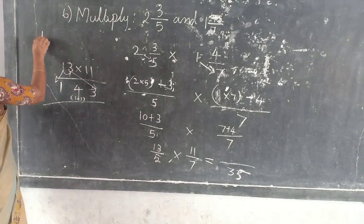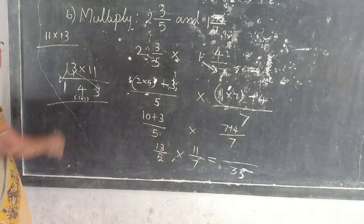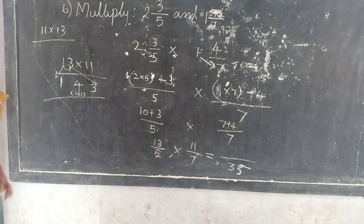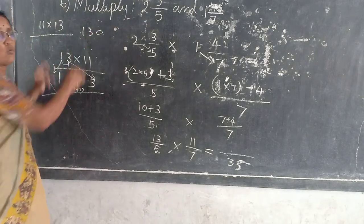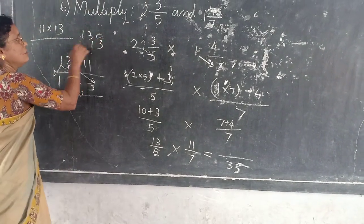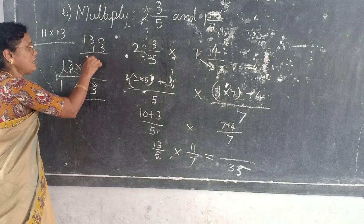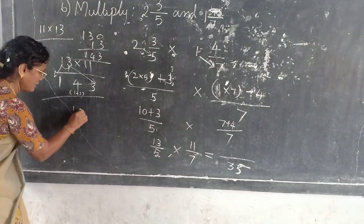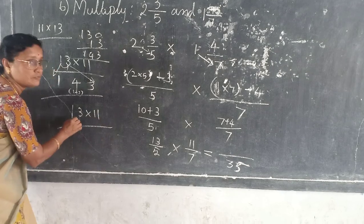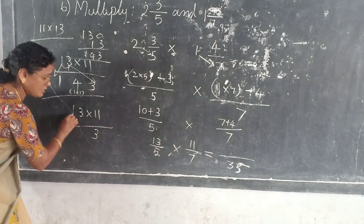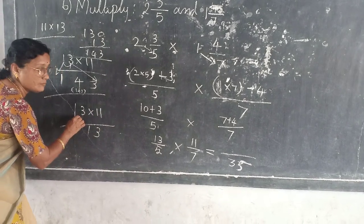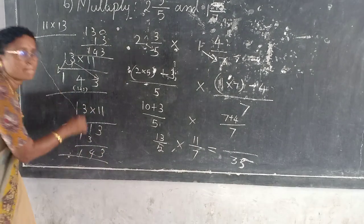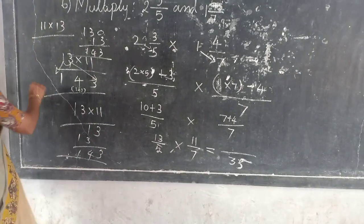Otherwise, how can you do it? 11 into 13. 10 plus 1. 10 into 13 is 130. 1 into 13 is 13. So 130 plus 13 is 143. Otherwise what? 13 into 11. 3 times 1 is 3, then 3 times 1 is 3. Understand?